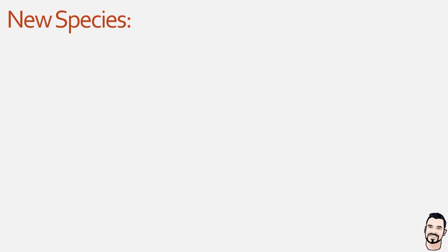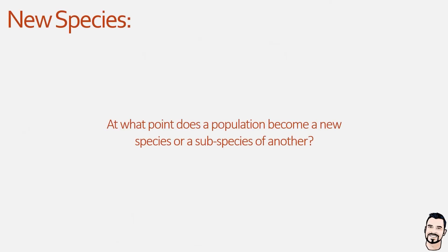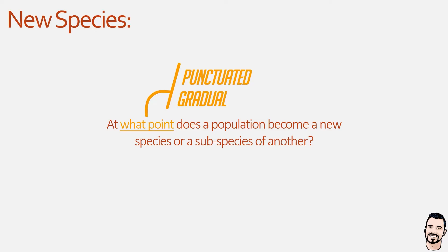A key question for evolutionary biologists is at what point does a population become a new species or a subspecies. Evolution by its definition is a process of natural selection that results in change over time, and if enough time passes this will lead to diversification which can then result in speciation. There are two theoretical frameworks that describe the tempo of the speciation process: a punctuated model representing a relatively quick transition, and the gradual model which represents a much slower transition period.